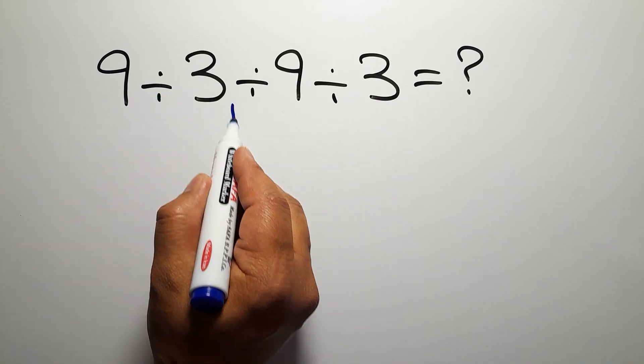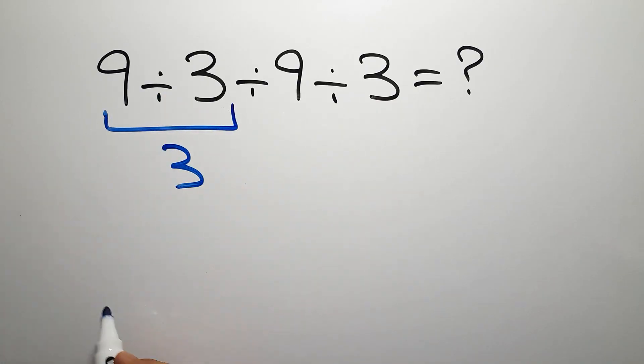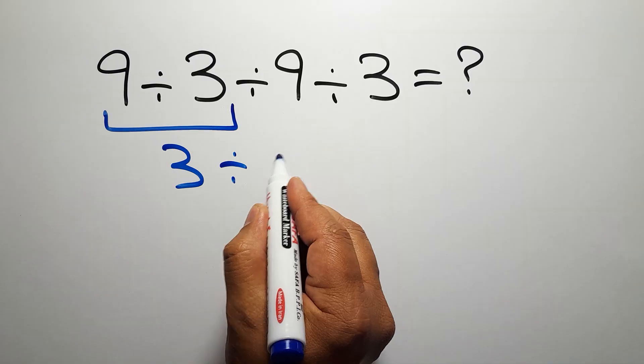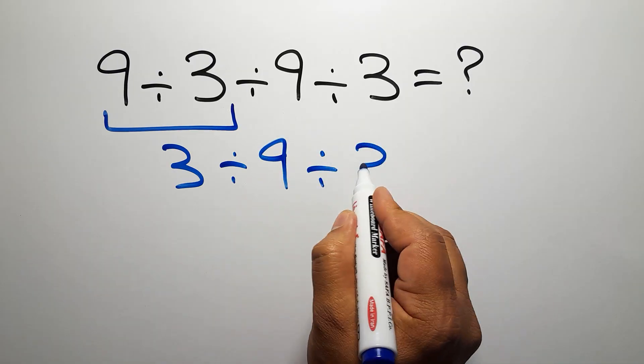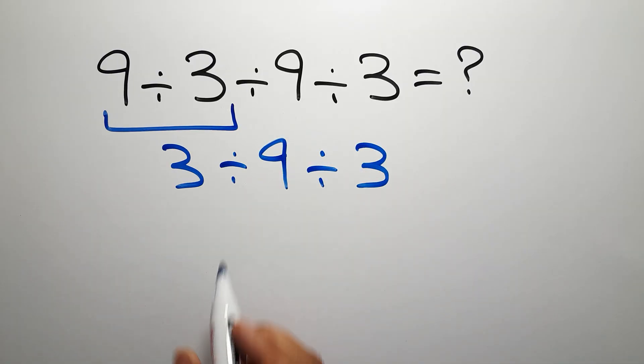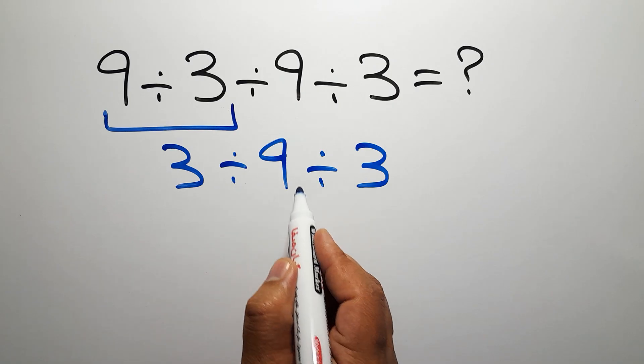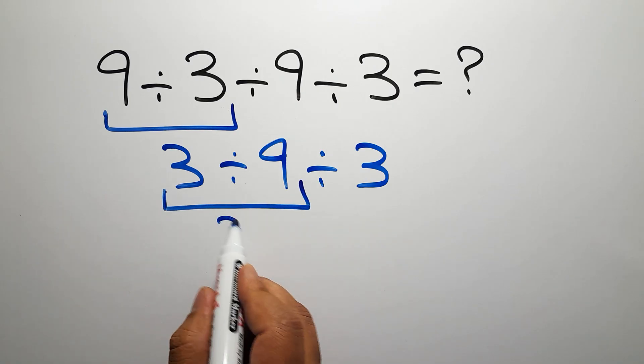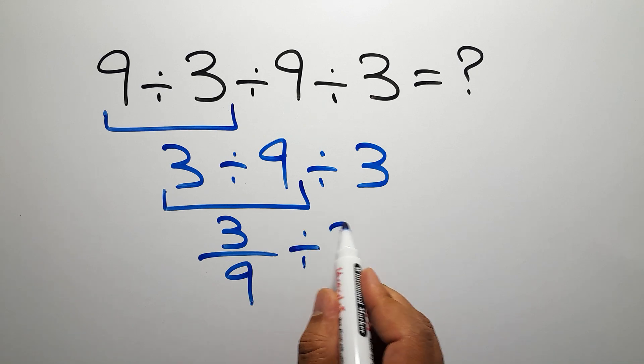9 divided by 3 gives us 3. So 3 divided by 9 divided by 3. No, we have to do this division. 3 divided by 9 can be written as 3 over 9, and divided by 3.